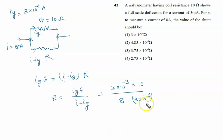If you see the 8 minus 3 into 10 raised to power minus 3, this 3 into 10 raised to power minus 3 is negligible, so you can forget it. So ultimately it is 3 into 10 raised to power minus 2 upon 8.